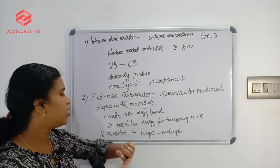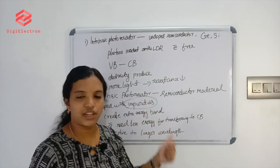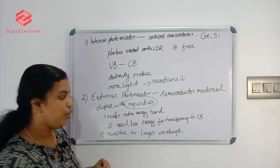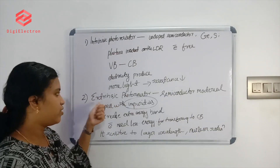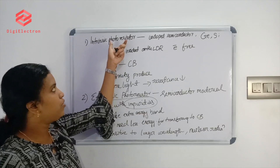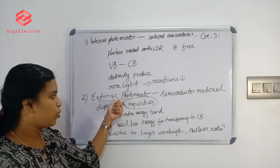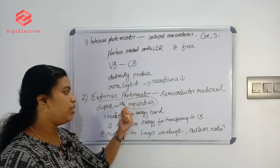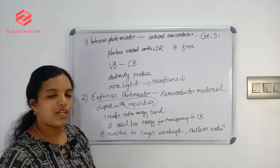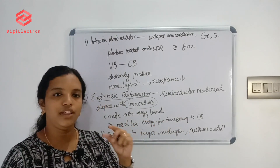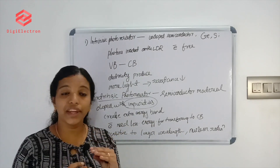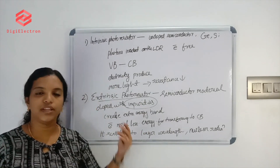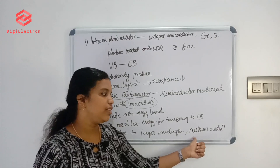Extrinsic photoresistors are also used to detect nuclear radiation. Compared to intrinsic photoresistors, extrinsic types are sensitive to longer wavelengths and can detect nuclear radiation.